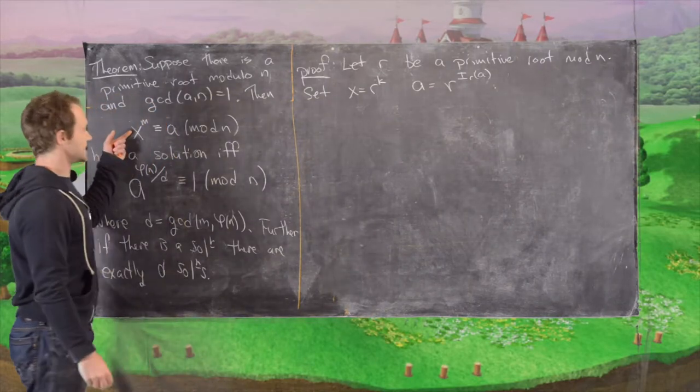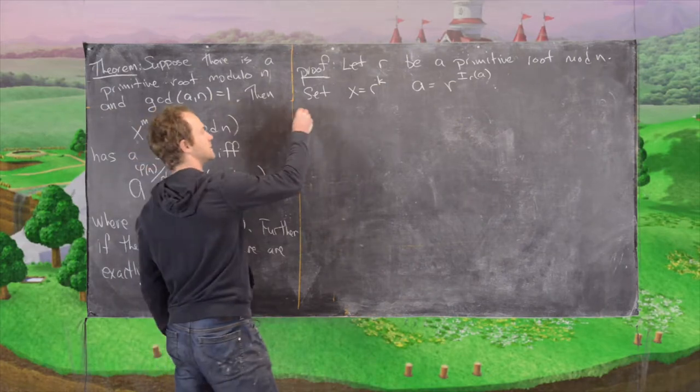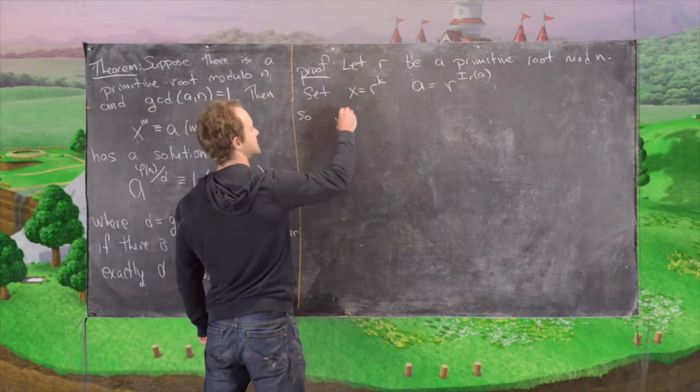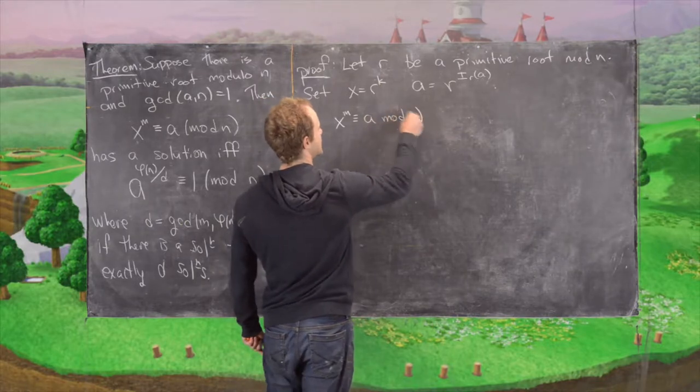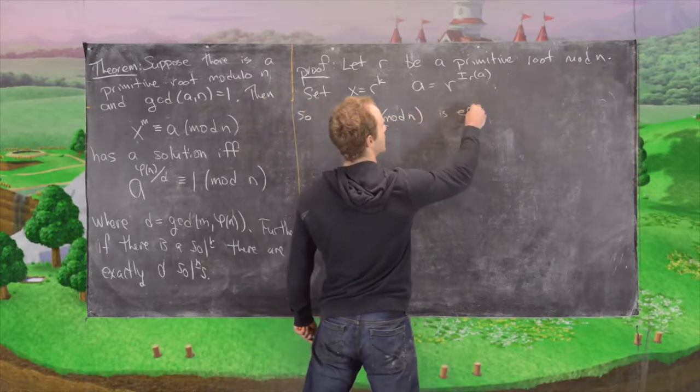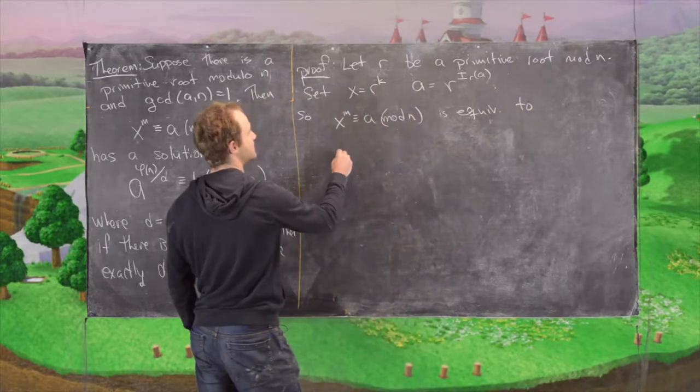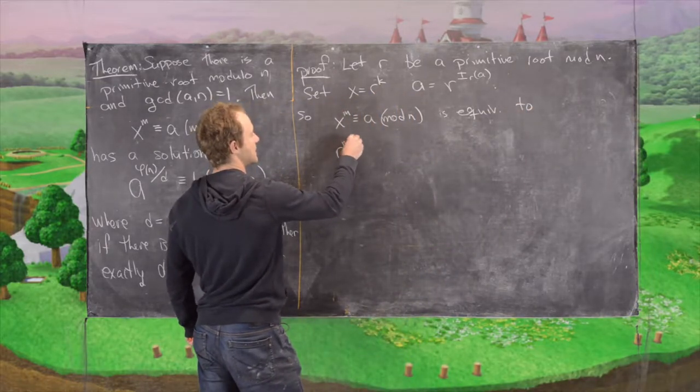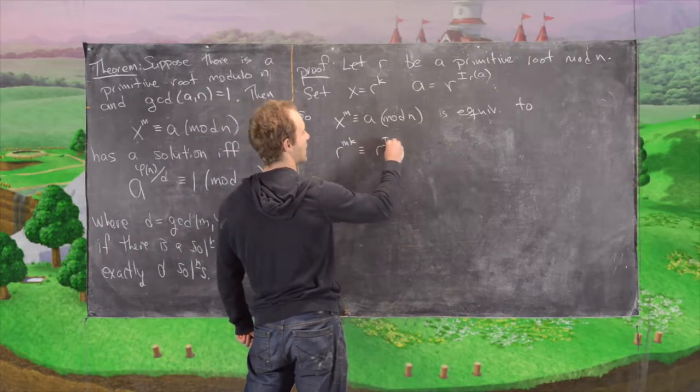This congruence is equivalent to the following: x to the m congruent to a mod n is equivalent to r to the mk congruent to r to the index r of a mod n.